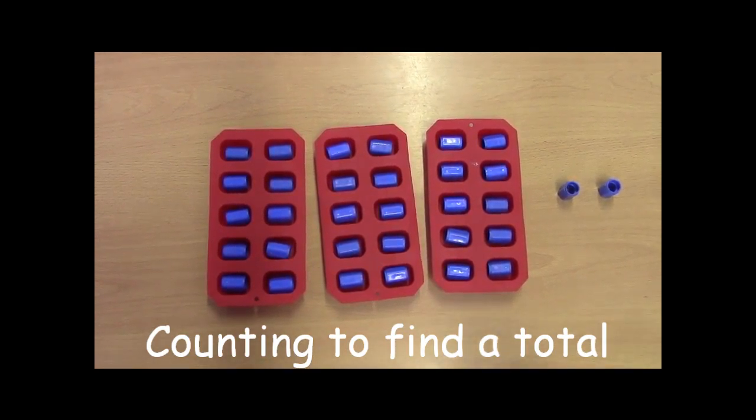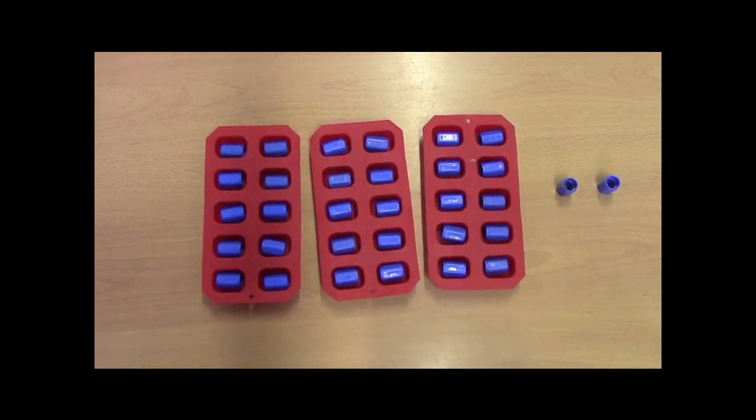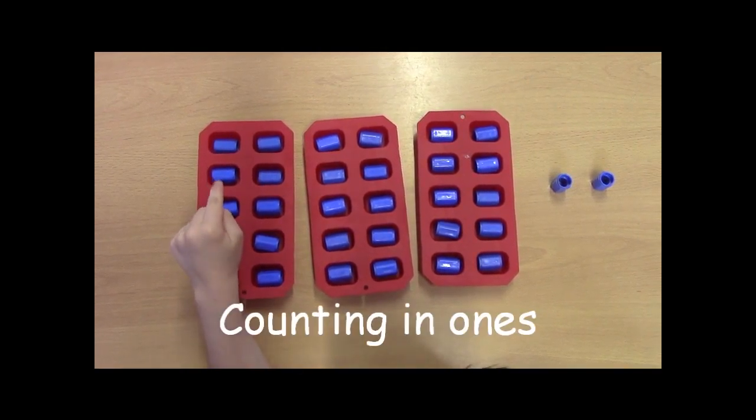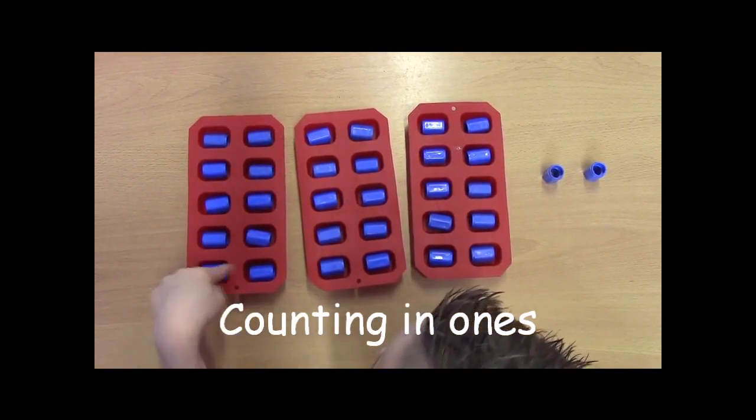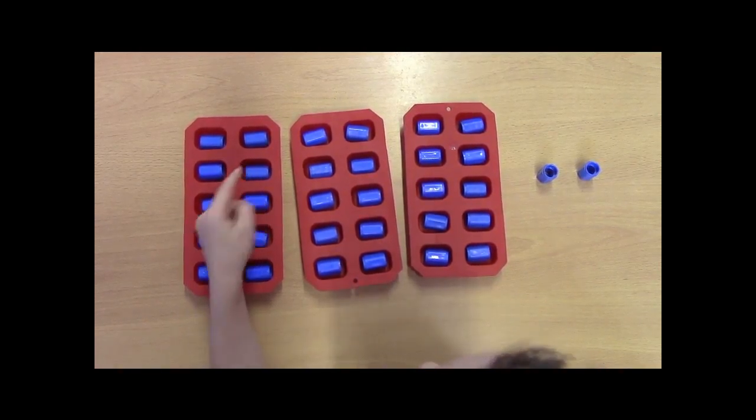Okay Joshua, how many chocolates are there here? One, two, three, four, five, six, seven, eight, nine, ten.